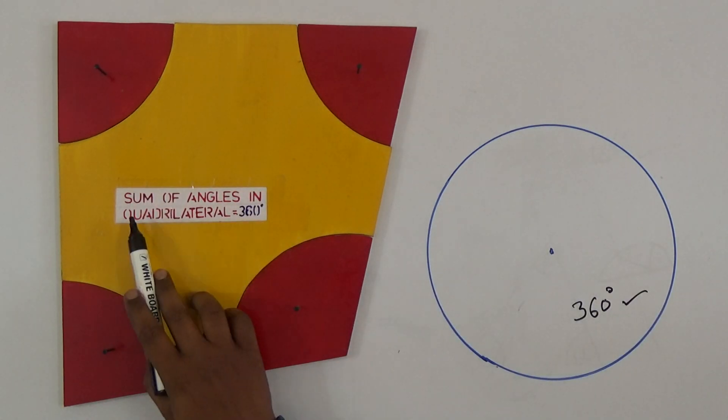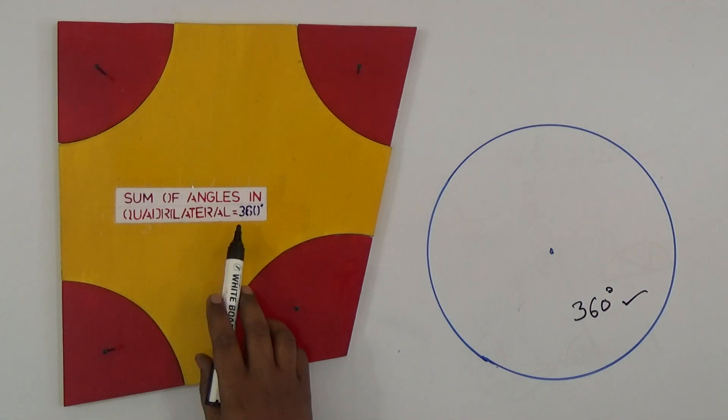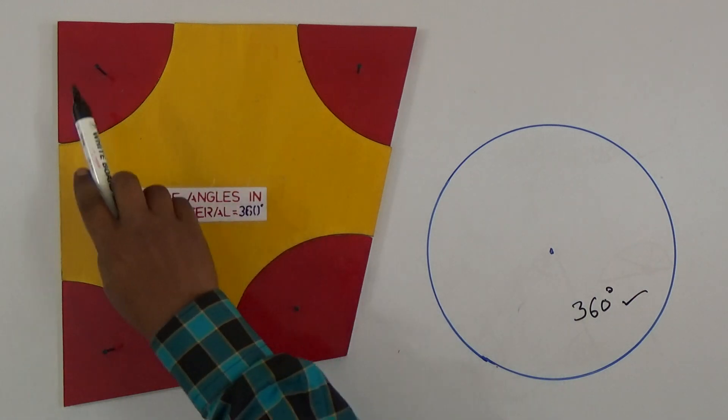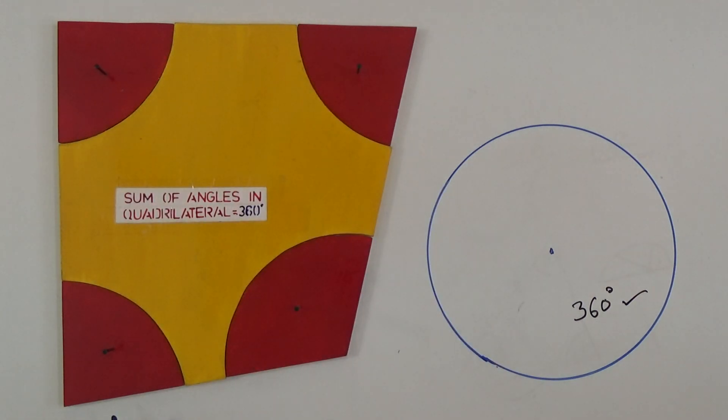Now these four angles if I add should equal 360 degrees, then only we can say sum of the angles in a quadrilateral is 360 degrees. For example, I took a quadrilateral shape plywood or any cardboard and cut it into four pieces.